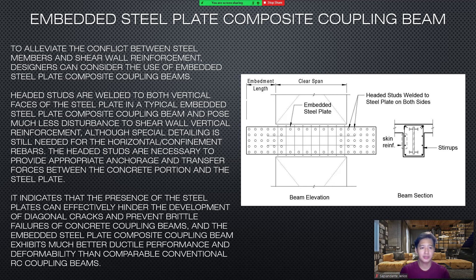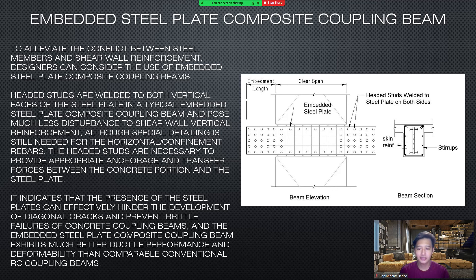Embedded steel plate composite coupling beams: to alleviate the conflict between steel members and shear wall reinforcement, designers can consider the use of embedded steel plate composite coupling beams. Headed studs are welded to both vertical faces of the steel plate in a typical embedded steel plate composite coupling beam, posing much less disturbance to shear wall vertical reinforcement. Although special detailing is still needed for the horizontal confinement rebars, the headed studs are necessary to provide appropriate anchorage and transfer forces between the concrete portion and the steel plate. The presence of the steel plates can effectively hinder the development of diagonal cracks and prevent brittle failures of concrete coupling beams. The embedded steel plate composite coupling beam exhibits much better ductile performance and deformability than comparable conventional reinforced concrete coupling beams.